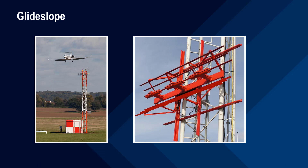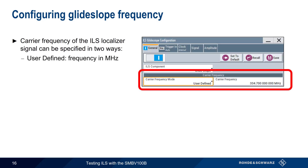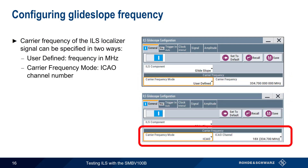Now that we've covered localizer, let's move on to glide slope. As previously noted, most of the concepts in localizer apply to glide slope signals as well. The first step in configuring a glide slope signal is specifying the glide slope frequency. As with localizer, this can be done either in units of megahertz or as an ICAO channel number. Here, 334.7 MHz corresponds to ICAO channel number 18X.